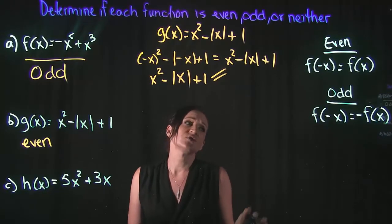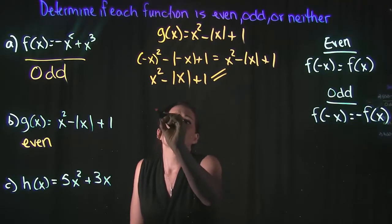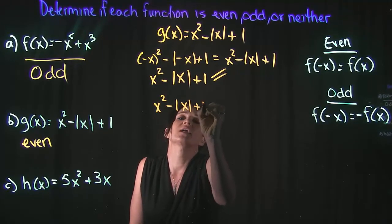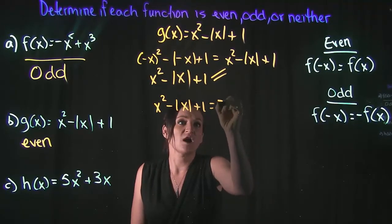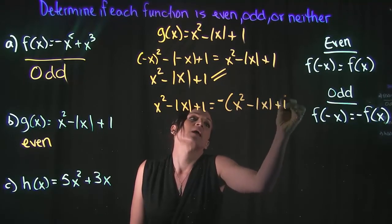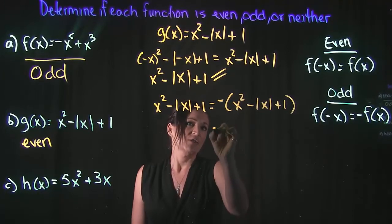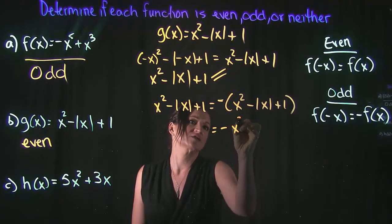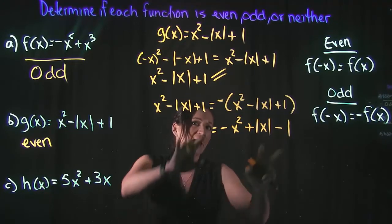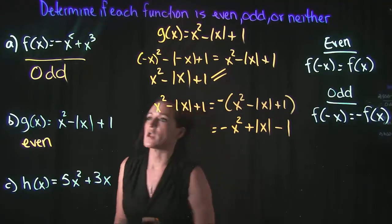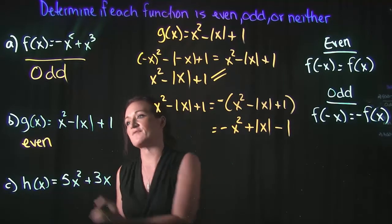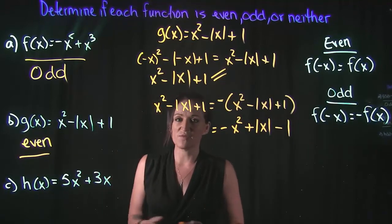We still need to check if it's also odd. The odd test asks if f of negative x equals negative f of x. Taking the opposite of the whole function gives us negative x squared plus the absolute value of x minus one. That is clearly not the same as what we got, so it's not odd. Since it passed the even test, it is definitely even.